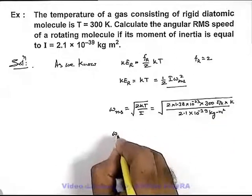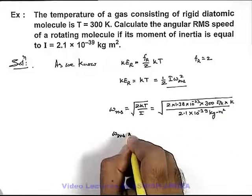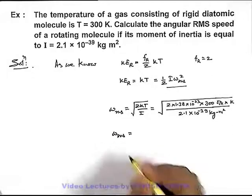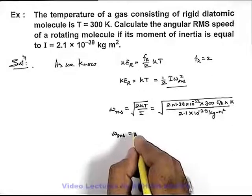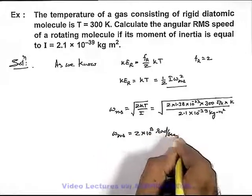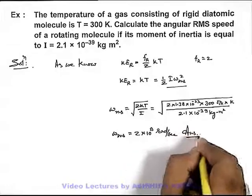So when we calculate the value of RMS angular speed can be written as, it is approximately 2 × 10⁹ radian per second, which is the answer to this problem.